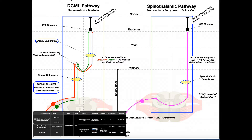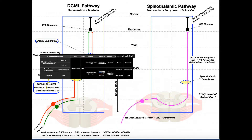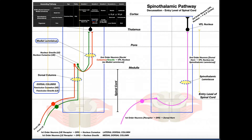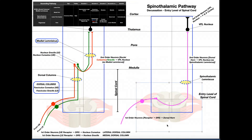In the previous video, we discussed the structure and the functions of the DCML pathway. This pathway is really the most complicated of the three ascending pathways that we're going to talk about. The spinal thalamic is a little bit easier to understand and a little bit easier to dissect in structure. But before we go any further, I just want to do a brief review of some of the concepts that are still important here.